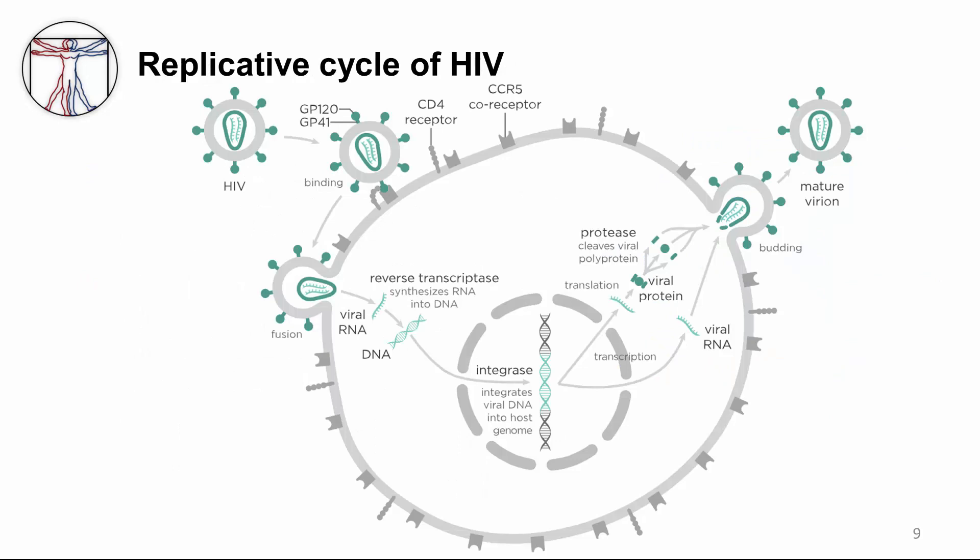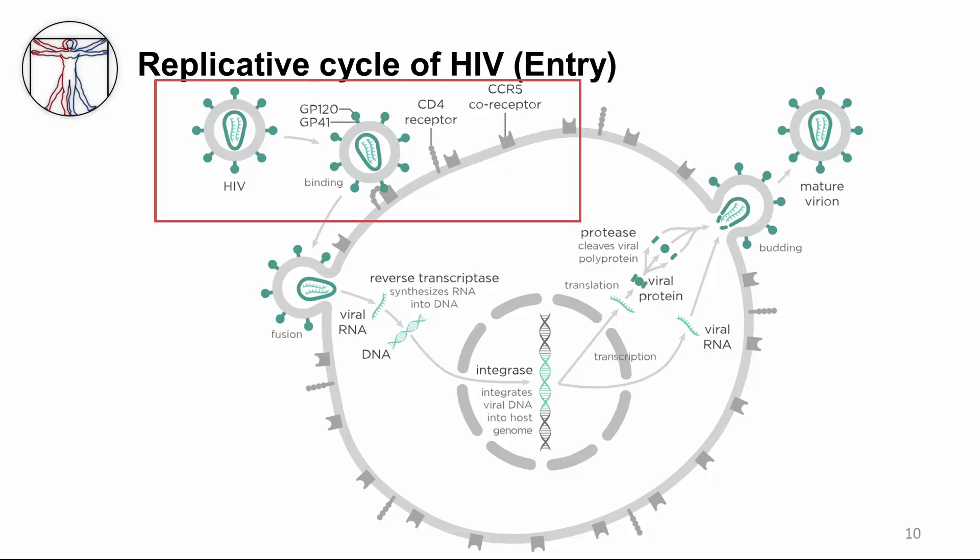Let's talk about the replicative cycle of HIV. Many of the important therapeutic advances against HIV target various steps in this cycle. The first step is entry: the binding of GP120 envelope protein from the virus to the CD4 receptor on the cell surface. GP120 also needs to interact with a co-receptor — a chemokine receptor — before the virus is allowed in. CCR5 is one important co-receptor, and CXCR4 is another. Famously, mutations in CCR5 confer protection against HIV infection.